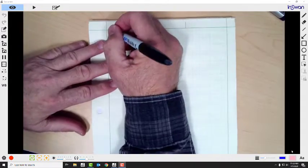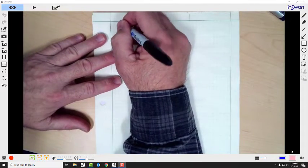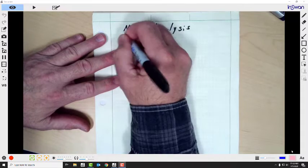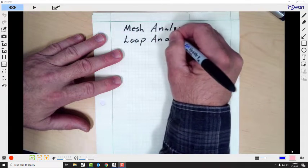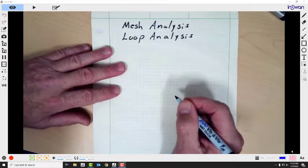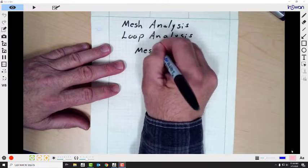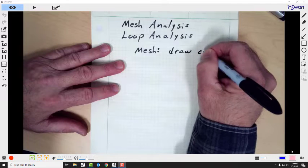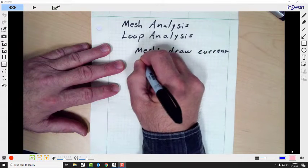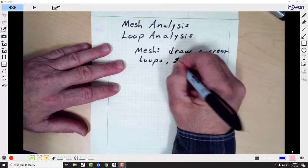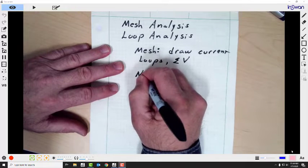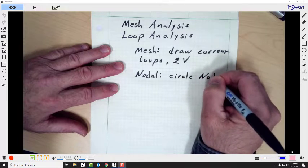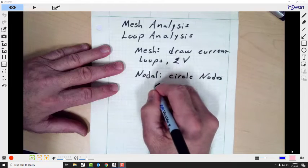Well one topic that's important to us is mesh analysis and another one is loop analysis. In mesh analysis we draw current loops and we sum voltages for each loop. For nodal analysis we circle the nodes and then we sum the currents.